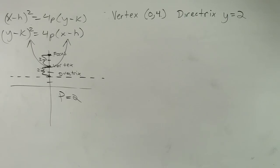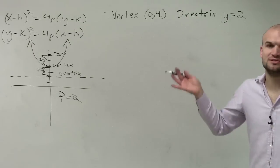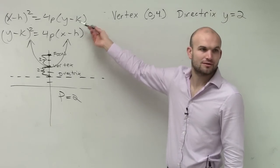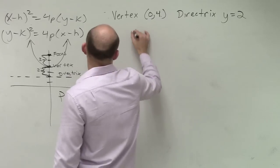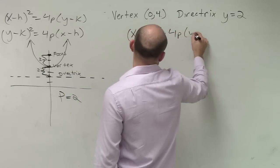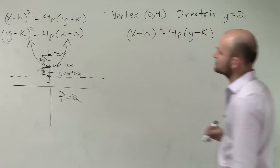So now, we know that the graph opens up or down. So which formula am I going to use? X squared or Y squared? X squared. X squared, right? So you do (x-h)² = 4p(y-k). So now let's just plug in what we know.